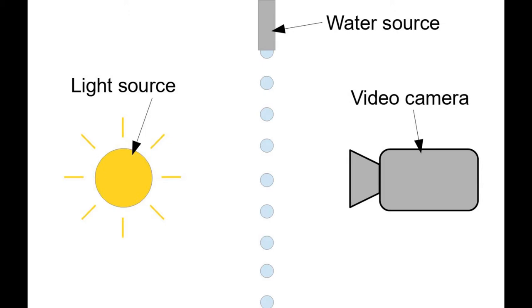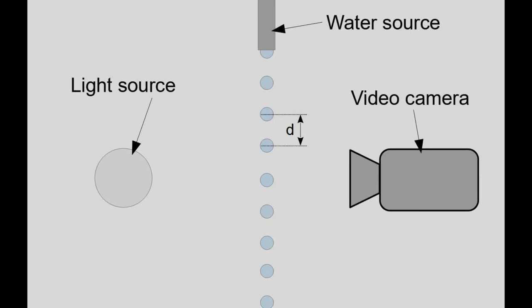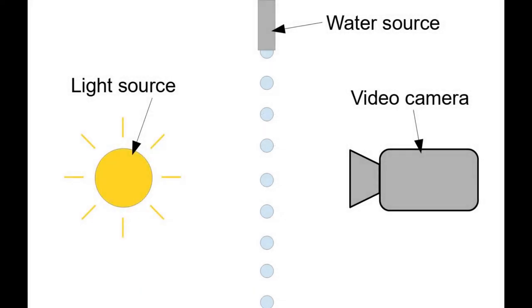After that we will turn the light source off. Now let's assume that it takes 10 ms for each individual water droplet to fall distance d. If we will turn back on the light source after exactly 10 ms, this water droplet will be in the same place where the previous water droplet was. That way we will have a feeling that the water droplets haven't moved and they are just levitating in mid air.